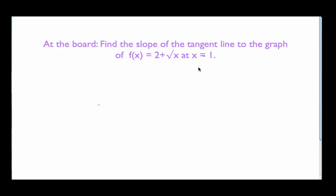Hello and welcome to the screencast. This is going to try to do two things at once. First, we're going to review how we find the slope of a tangent line to the graph of a function at a point — this is the example we did in class in Math 135 on Friday. And we're also going to take it a little bit slower on how to use Excel to do this, so this will serve as an Excel screencast as well.